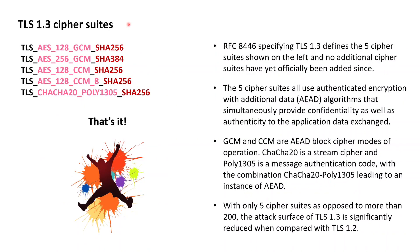Proceeding now to TLS 1.3, we find that RFC 8446, released in 2018 and specifying TLS 1.3, only defines a total of exactly 5 cipher suites. Also, no additional cipher suites have yet been added to TLS 1.3, so up until today the 5 cipher suites listed on the left is still the complete set of cipher suites available within TLS 1.3.